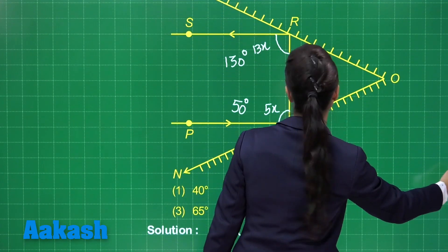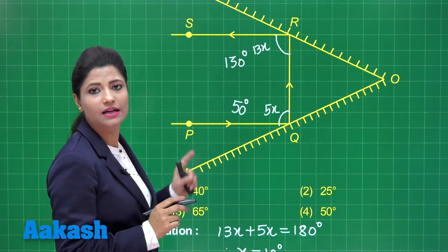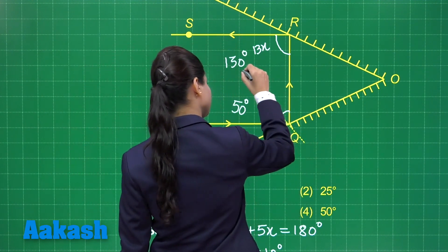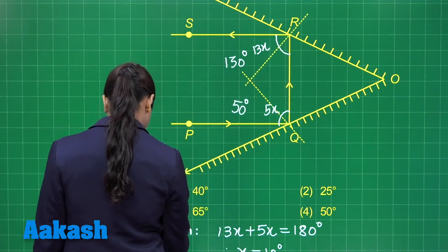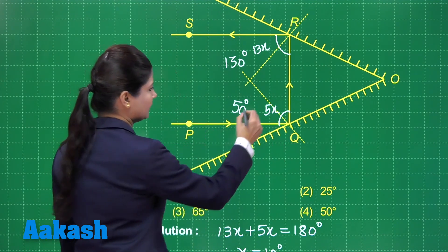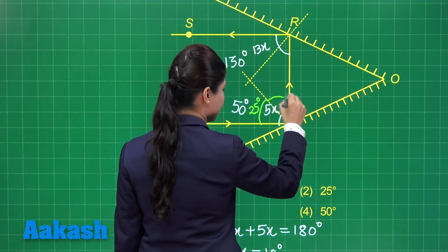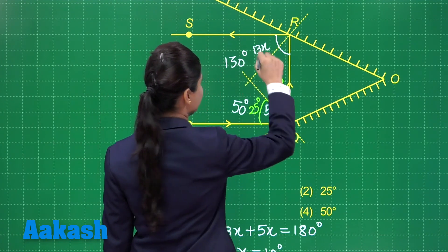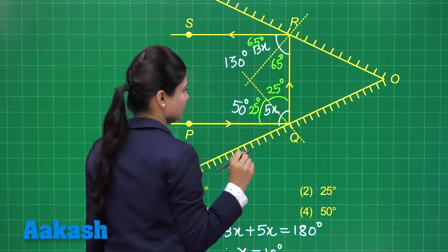The incident ray makes equal angles with the normal as well as the reflected ray. If I draw a normal here and another normal here, you find that in this case, the angles are equal. The total for this mirror is 50 degrees, so this angle measures 25 degrees and this angle also measures 25 degrees. For the other mirror, this is 130 degrees, so this angle measures 65 degrees and this remaining angle measures 65 degrees.